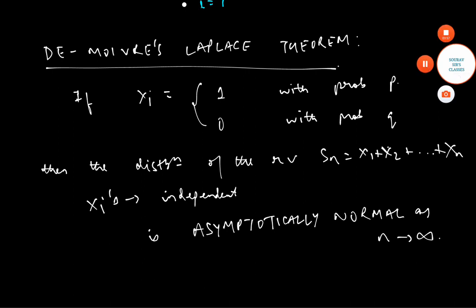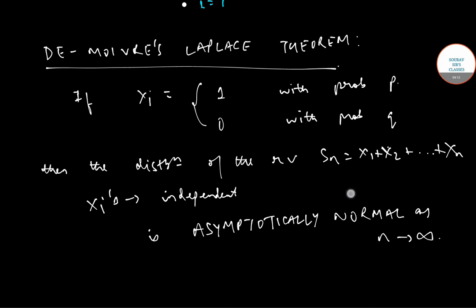Thus, from this theorem it also follows that standard binomial variate tends to standard normal variate as n tends to infinity, or in simpler words, binomial distribution tends to normal distribution as n tends to infinity.